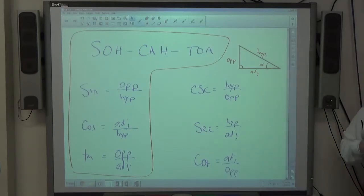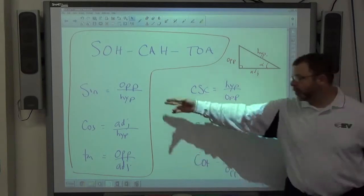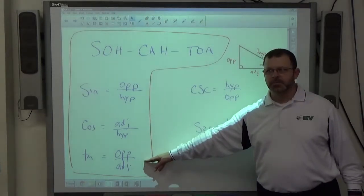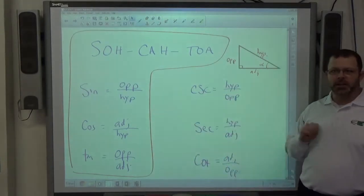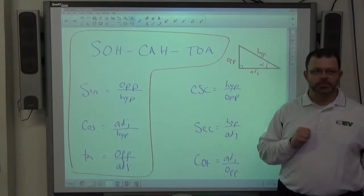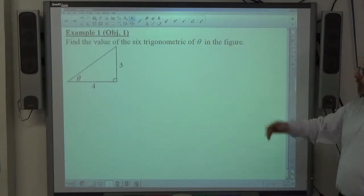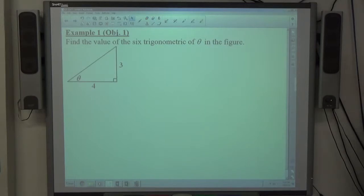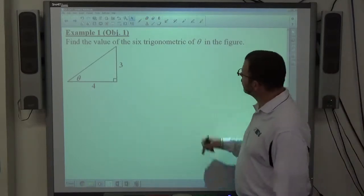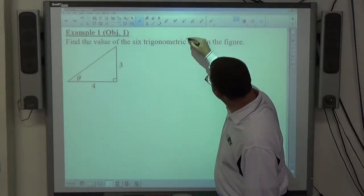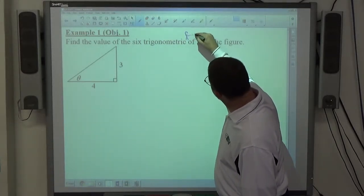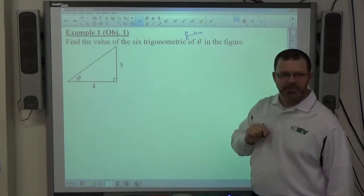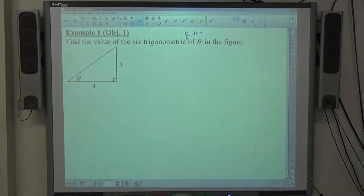So in general, on the problems where it says find the value of all six trigonometric functions, if you do what you already know how to do, then simply reciprocate the answers. You get these. That's what we're looking for. So example one, find the value of the six trigonometric functions of theta in the figure. That should say functions. Pretend functions is written there. Six trig functions.